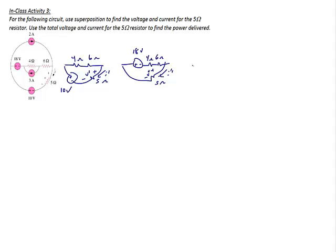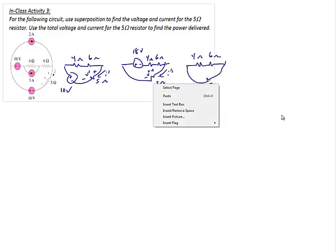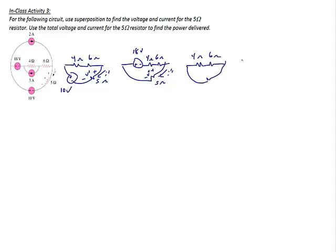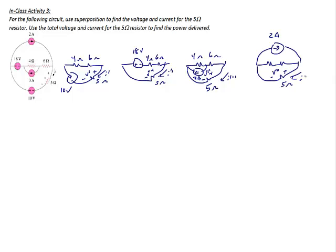Now let's turn each of the current sources on. For the 3 amp source: we have 4 ohms and 6 ohms, and at the bottom the 5 ohm resistor, with the 3 amps source in. I label V triple prime the voltage across the 5 ohm resistor and I triple prime the current through it. The last circuit has the 2 amp source on, with the voltage across the 5 ohm resistor labeled V 4 prime and the current I 4 prime.